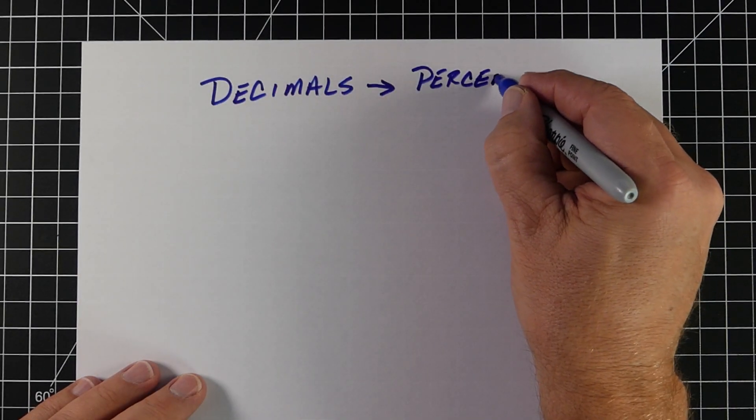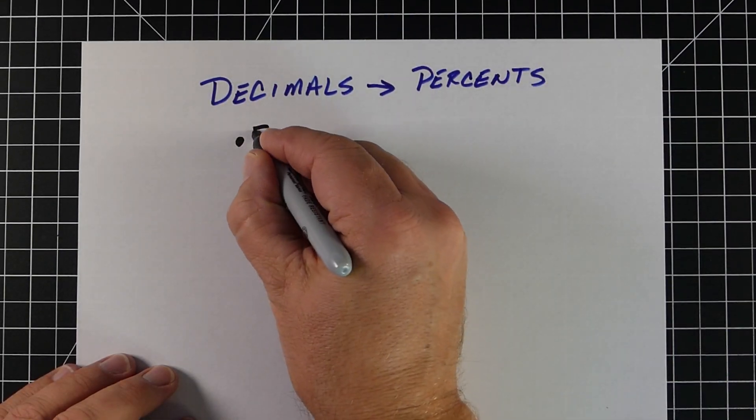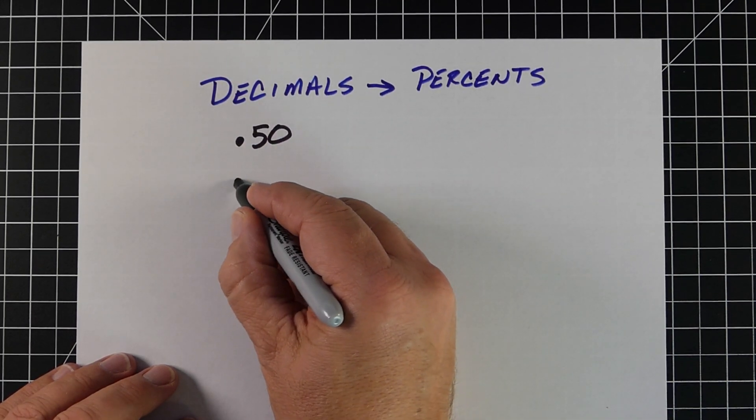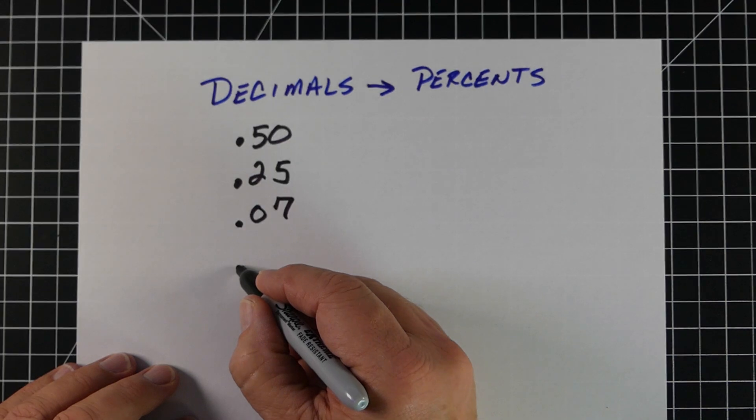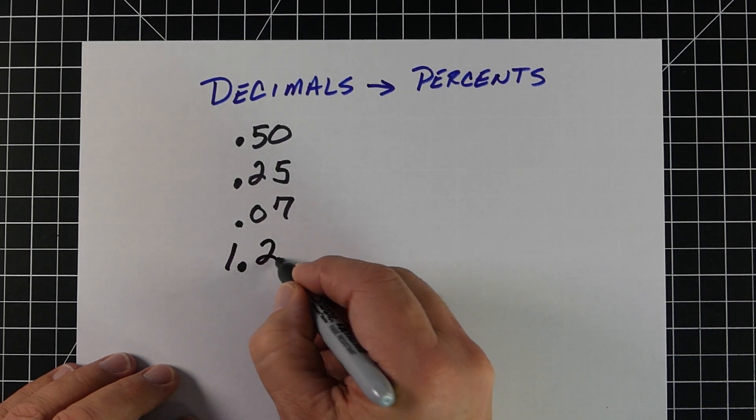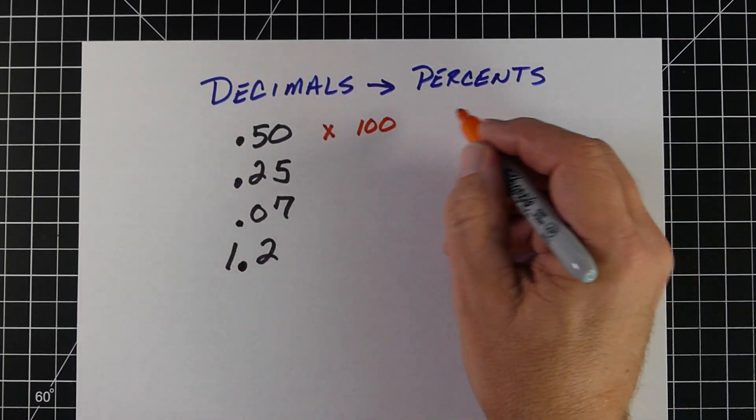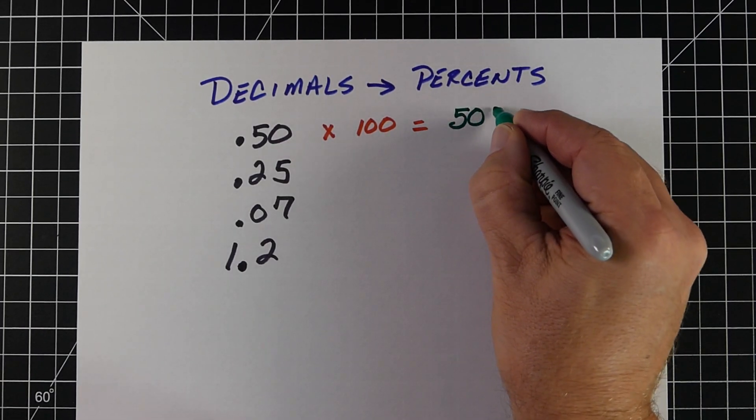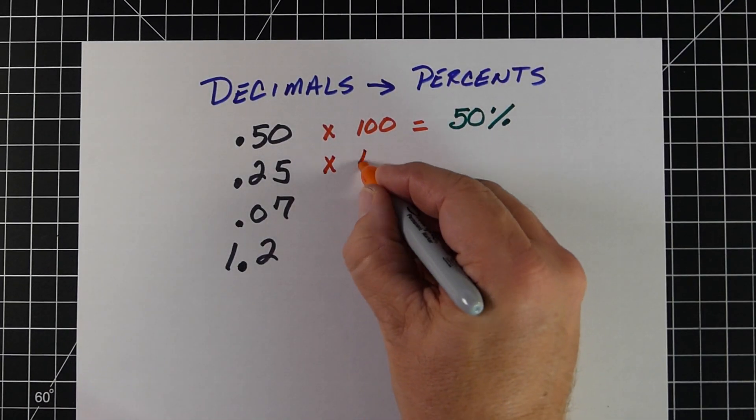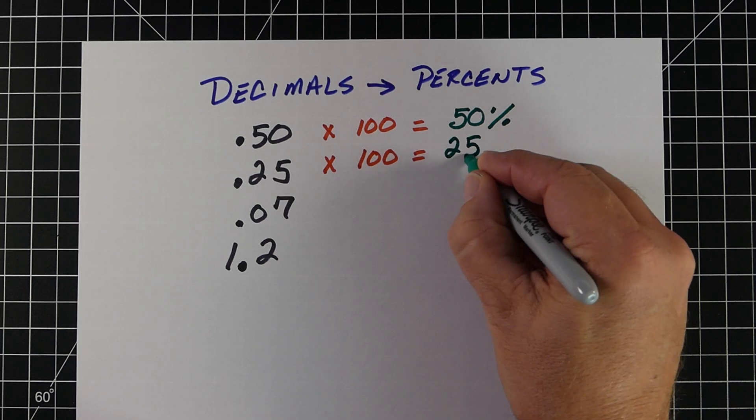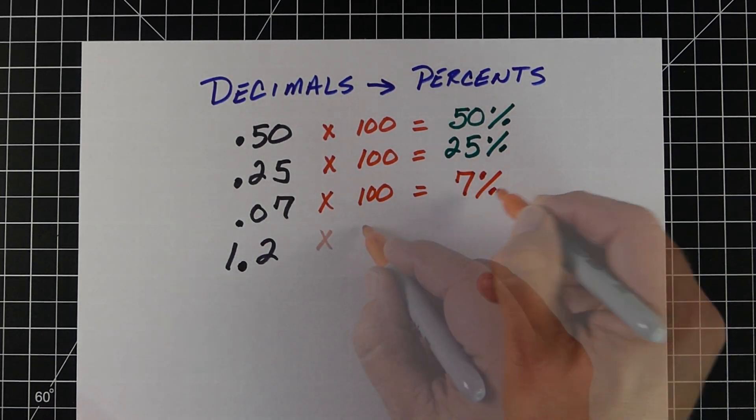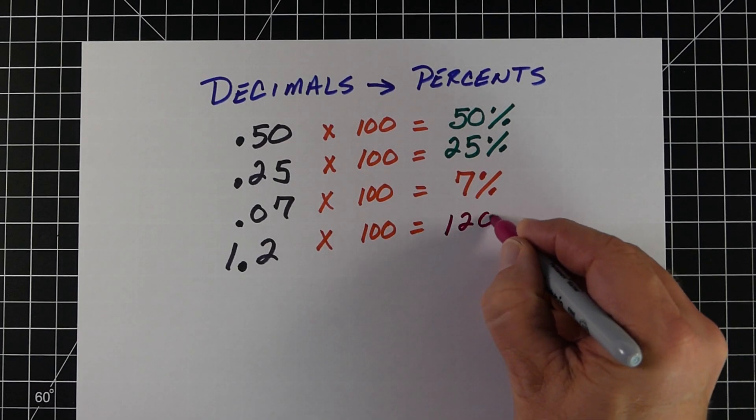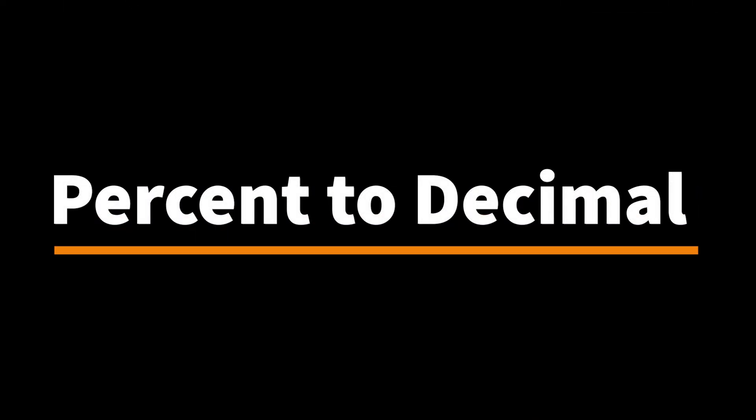There's six key situations where we have to convert one to another. Here's our first of the six: converting decimals to percentages. It's fairly easy. When you look at our decimals - 0.5, 0.25, 0.07, 1.2 - all we have to do to make a decimal percent is just multiply it by 100. So 0.50 becomes 50%, 0.25 becomes 25%, 0.07 becomes 7%, and 1.2 becomes 120%.